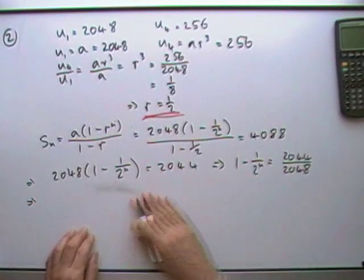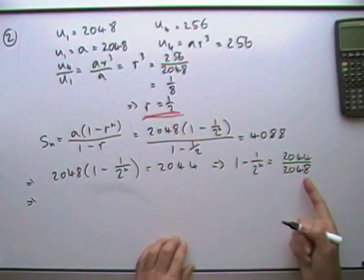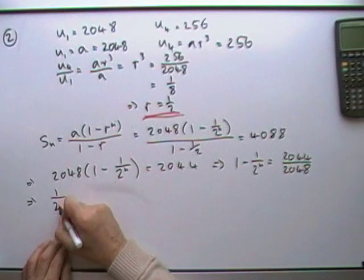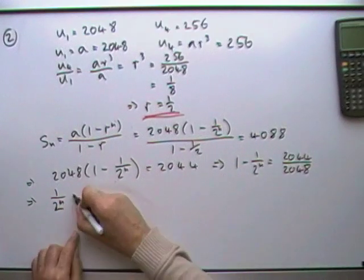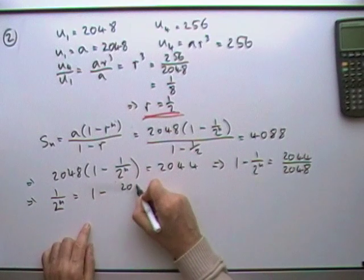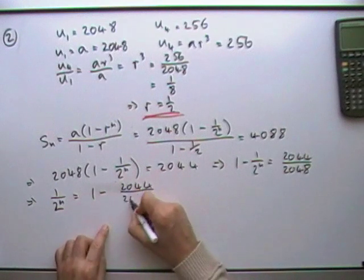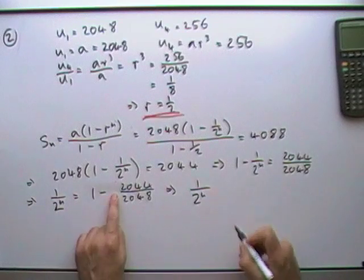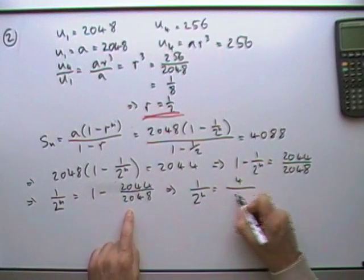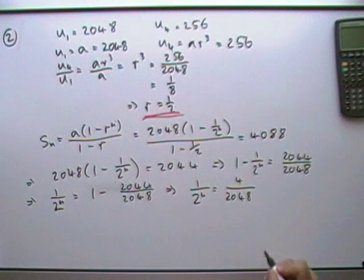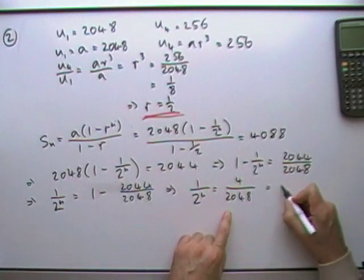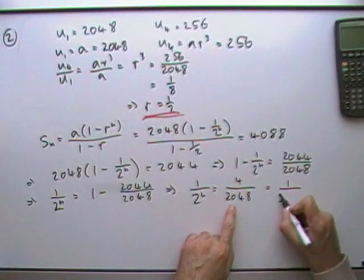Next, I'm going to take the 1/2^N to the right and read it backwards. So I've got 1 minus 2044/2048. I'm not simplifying this just now. So 1/2^N would just be 4/2048, which I could cancel down to 1/512. Another famous one.